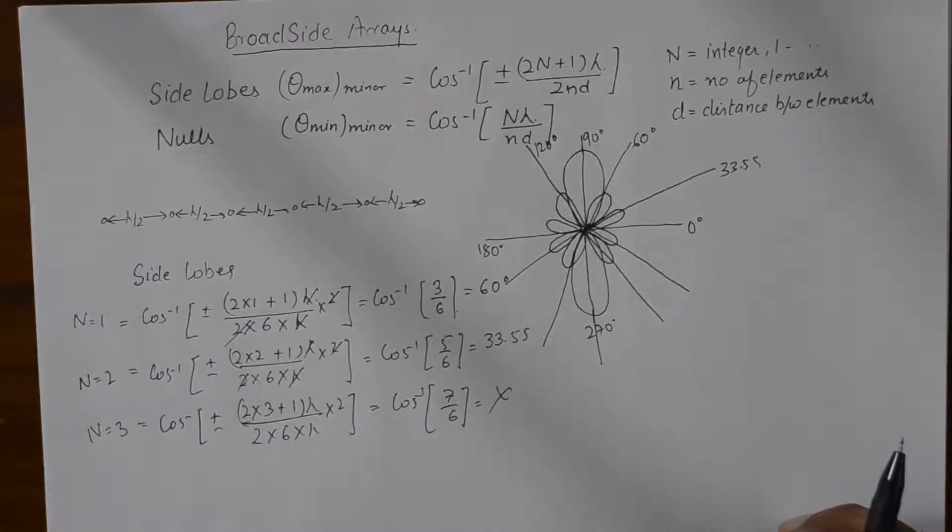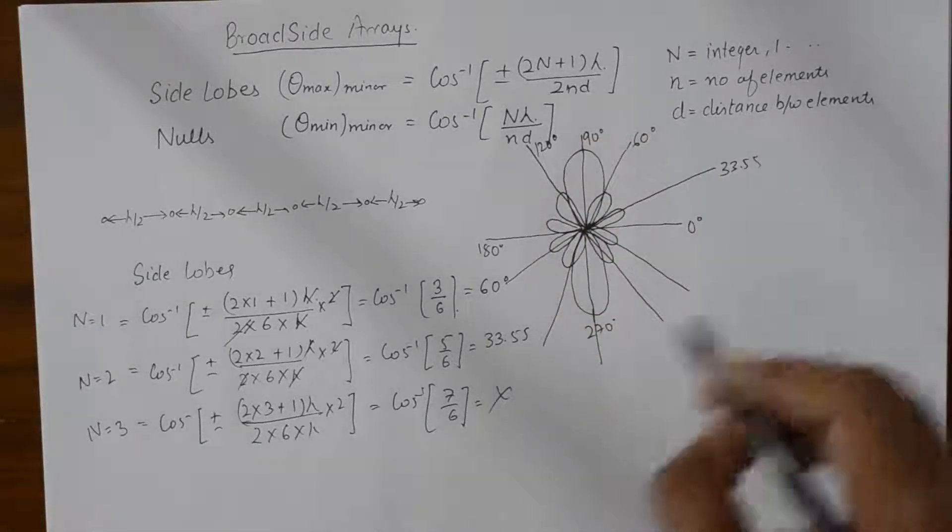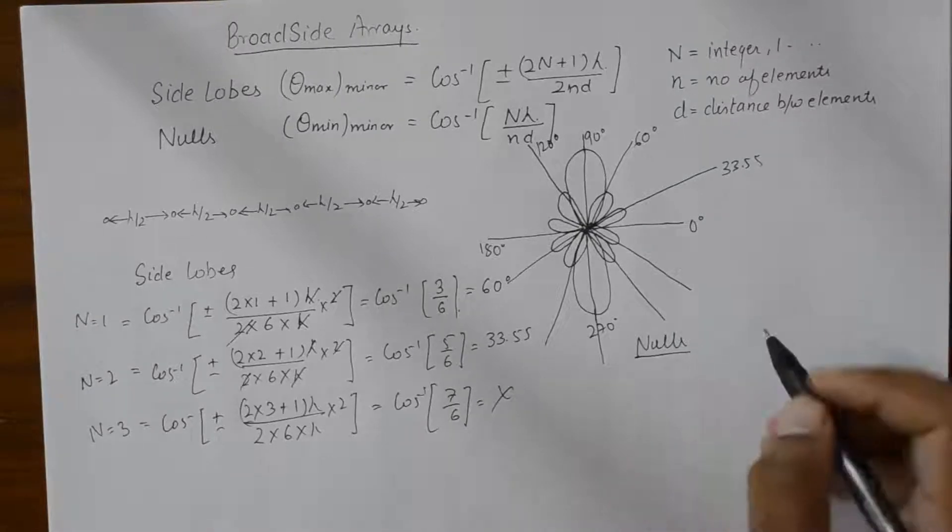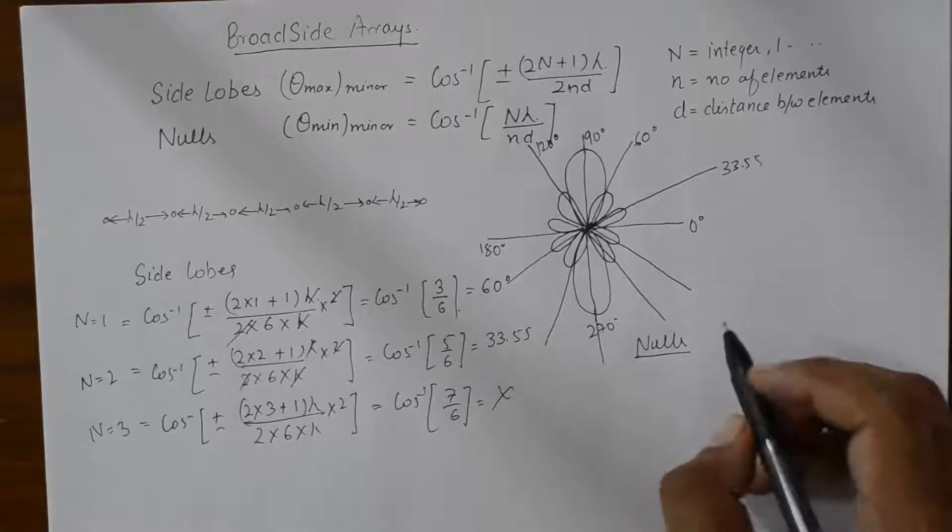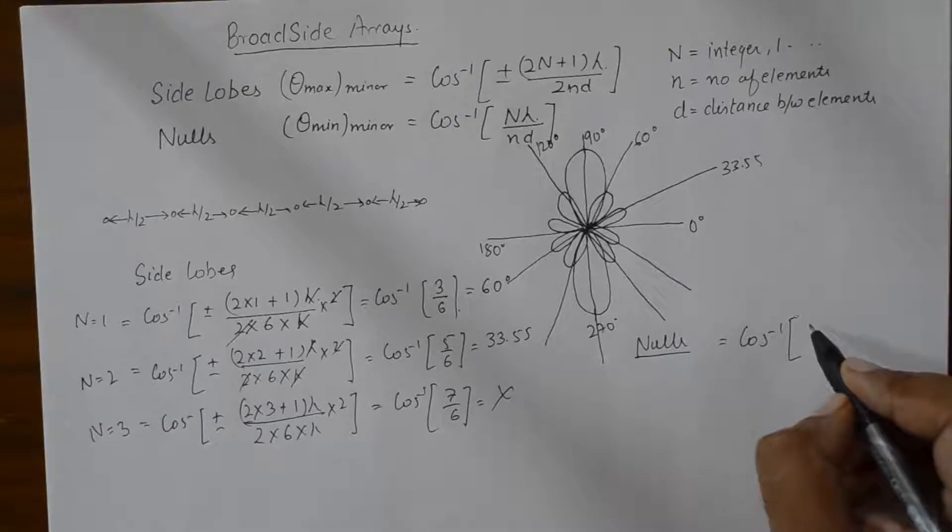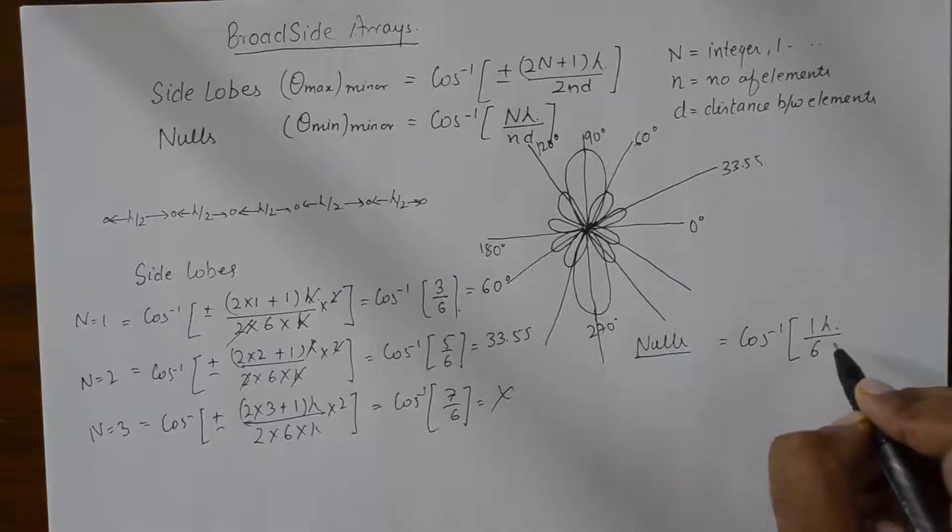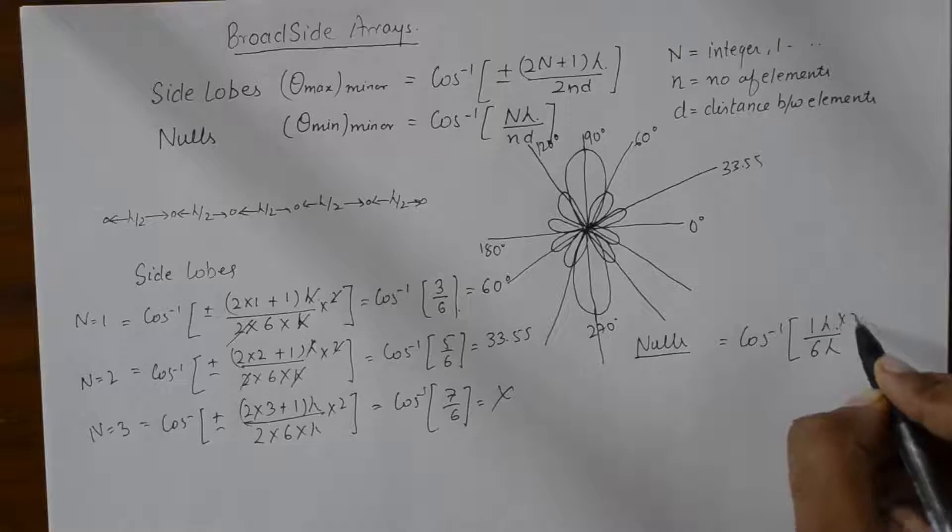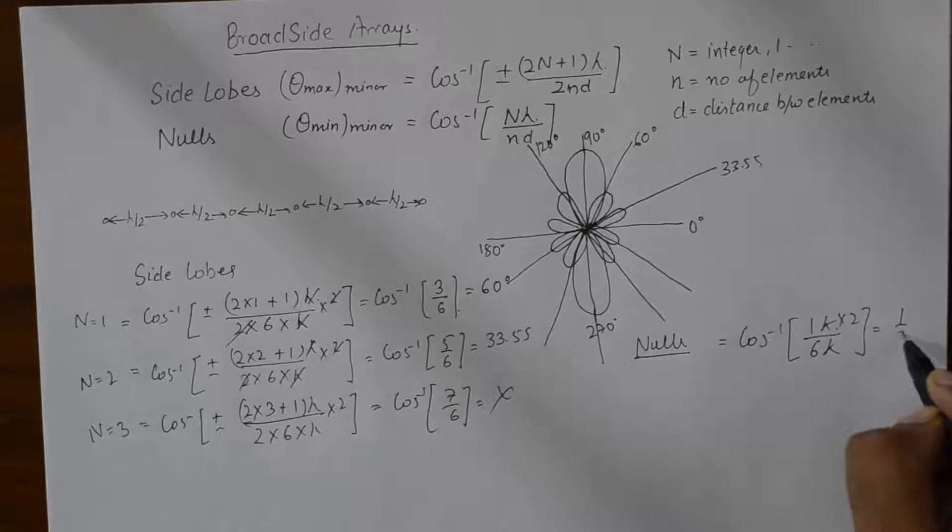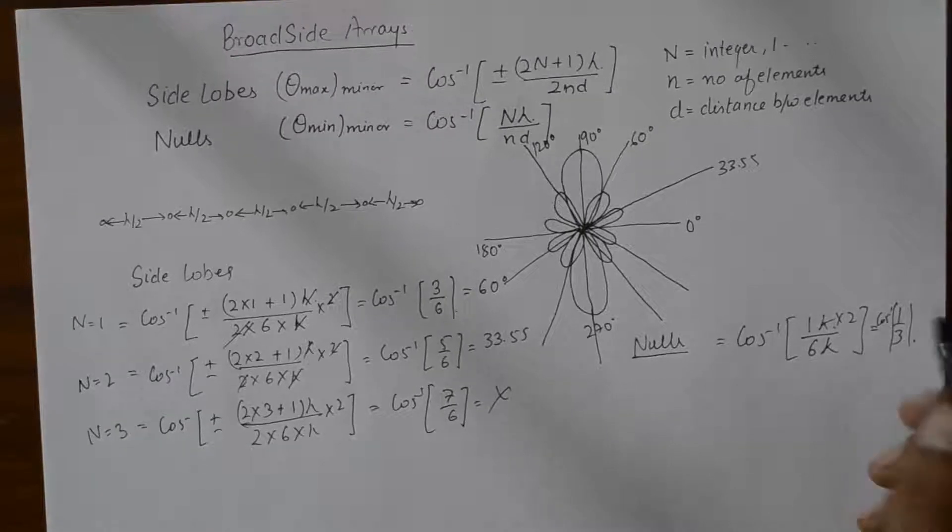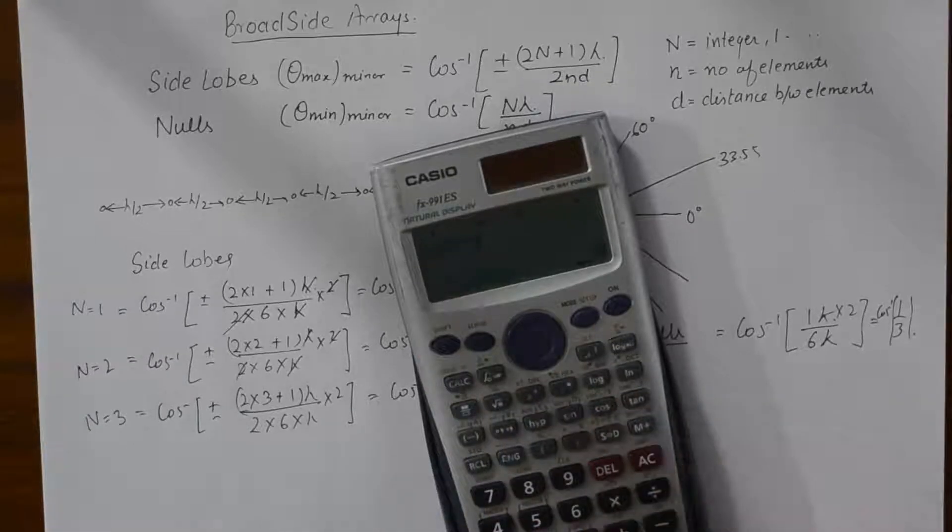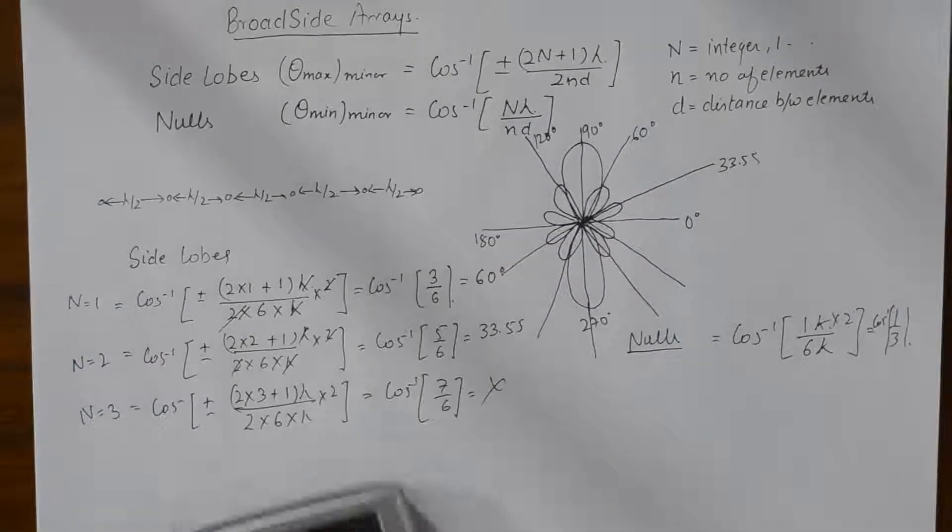And to calculate the nulls, we have this formula. So, we start putting the values of cos inverse 1 into lambda upon 6 into lambda by 2. So, this becomes 1 by 3 cos inverse. So, cos inverse 1 by 3 is 70 degrees.